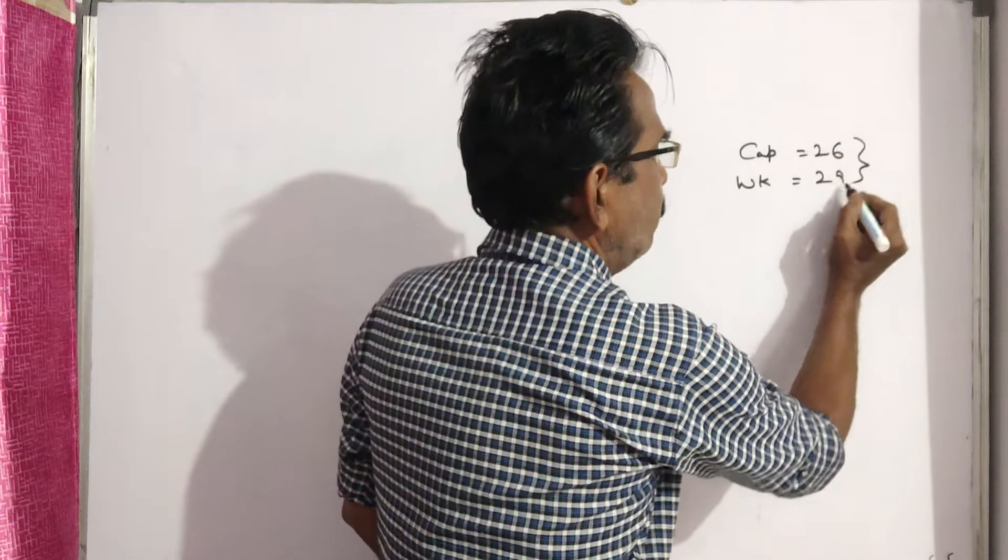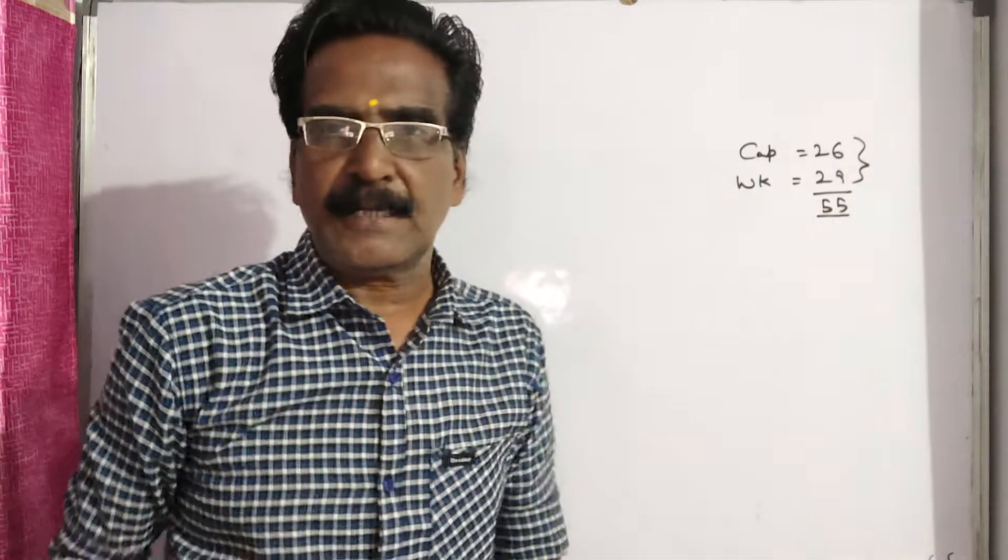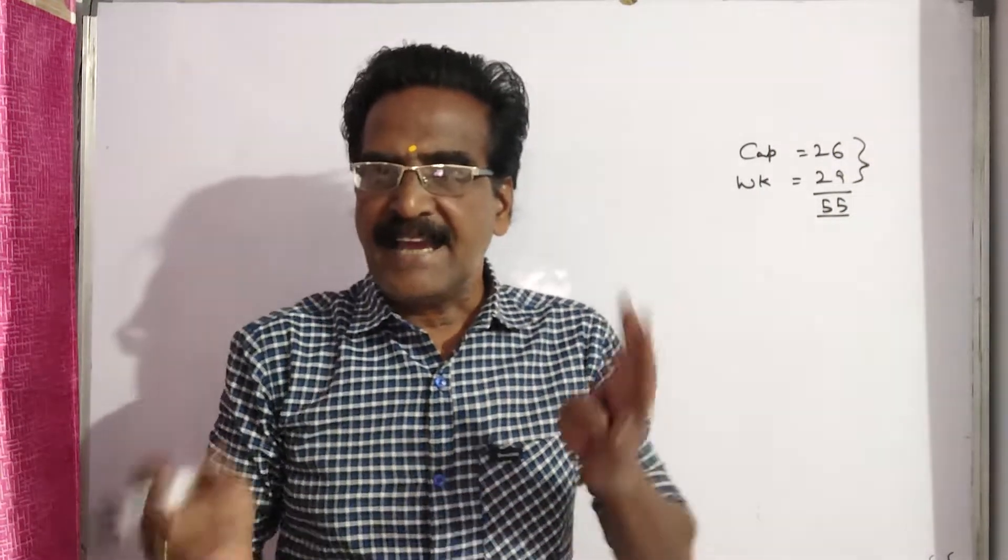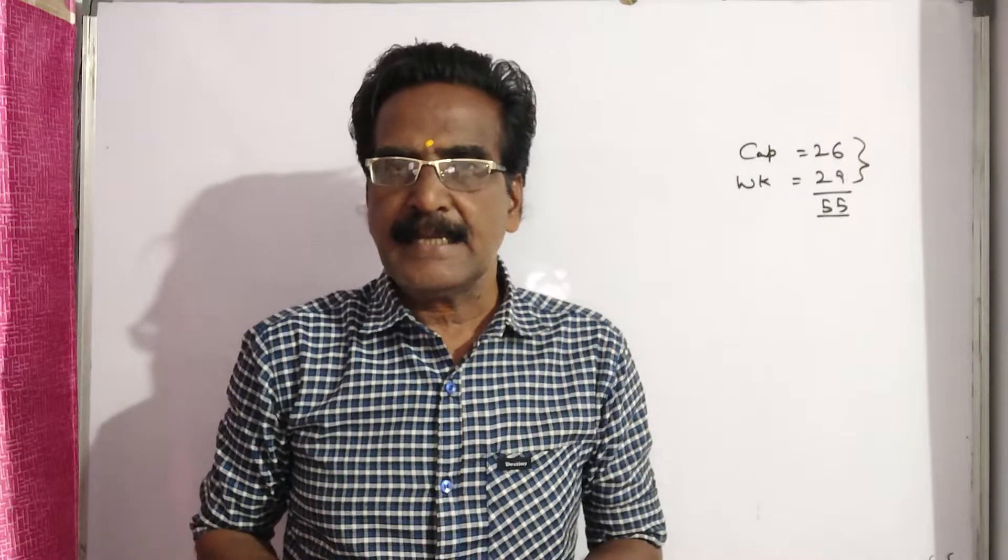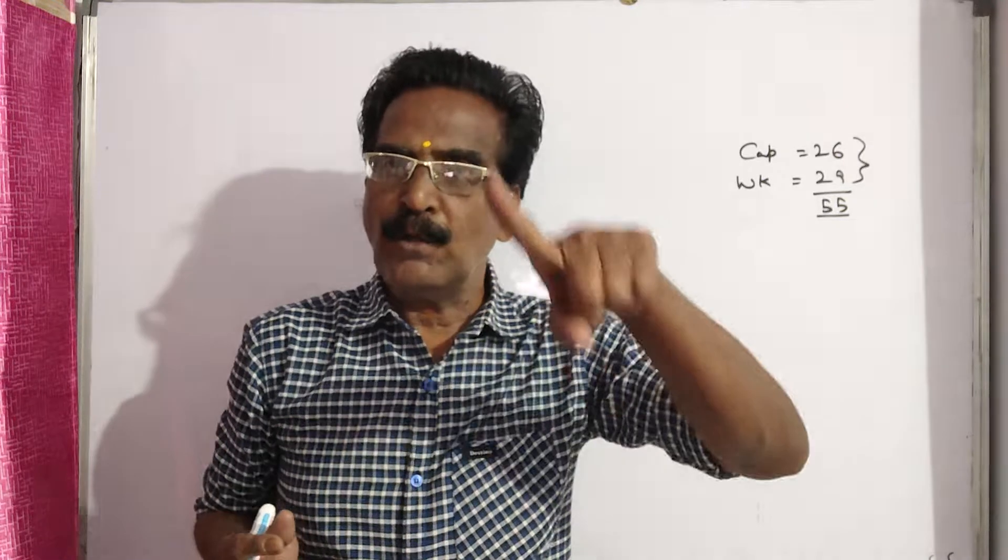If these two persons are excluded, the average of the remaining is 1 less than the average of the whole team.